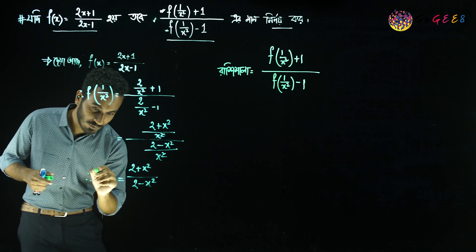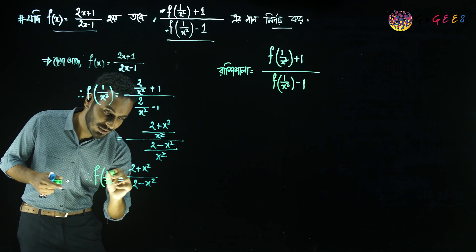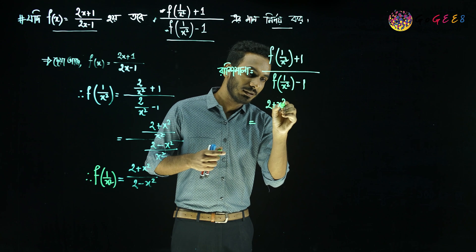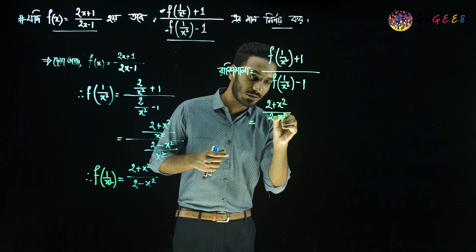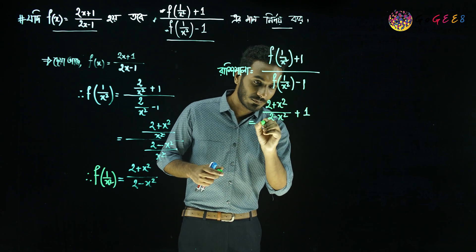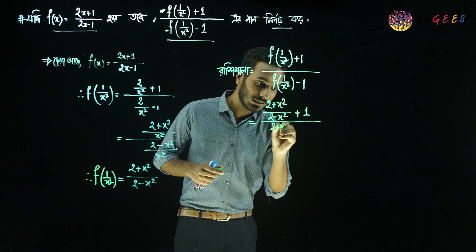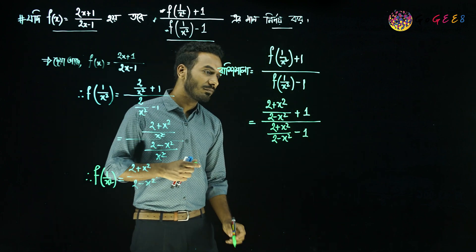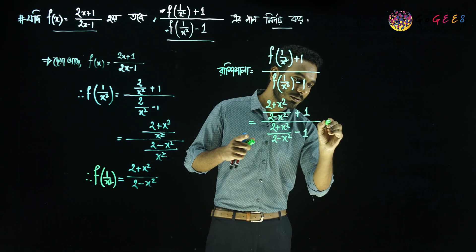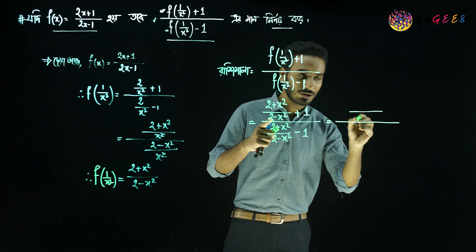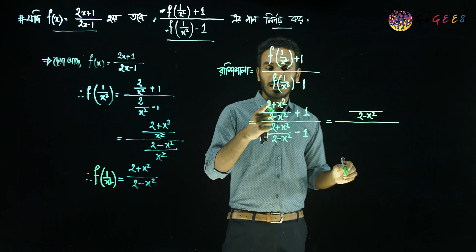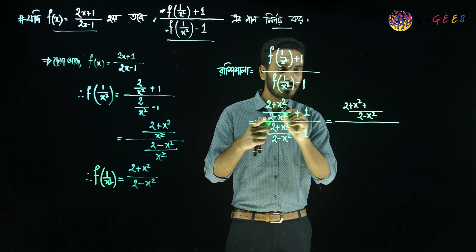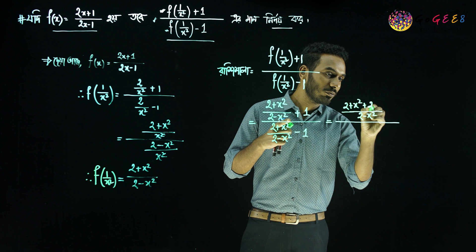f of 1 by x square is given. So on top we have 2 plus x square divided by 2 minus x square. Then plus 1 divided by 2 plus x square divided by 2 minus x square minus 1. Now let us simplify — take the common denominator 2 minus x square, so on top we write 2 plus x square, plus 1 into 2 minus x square.